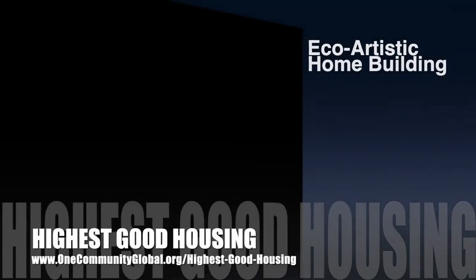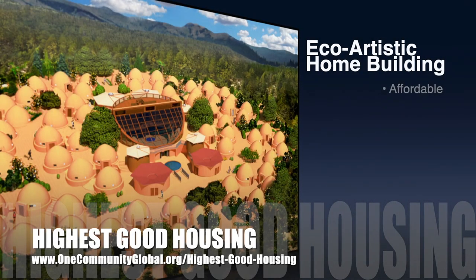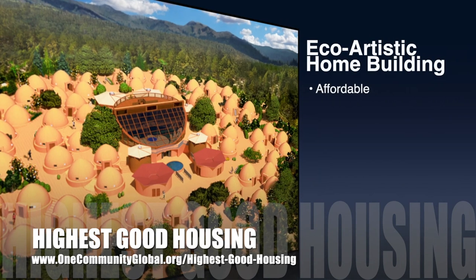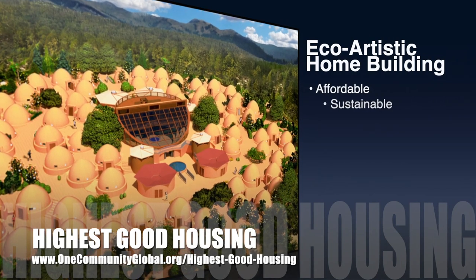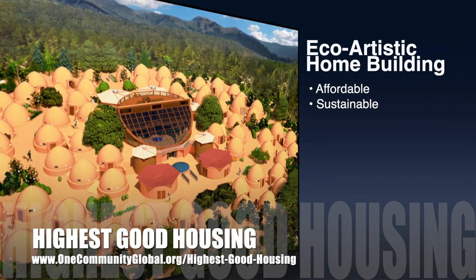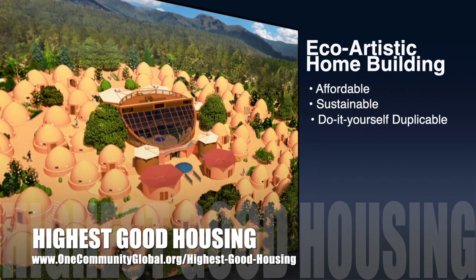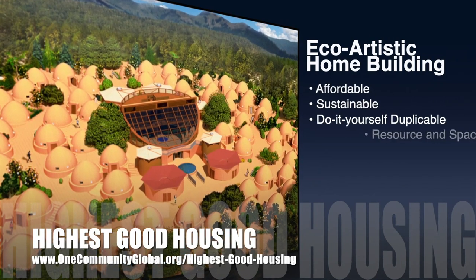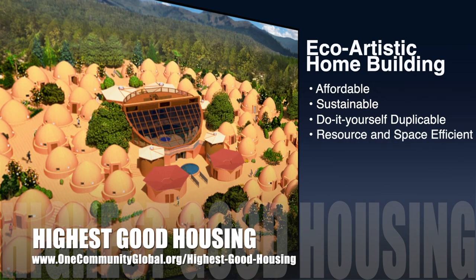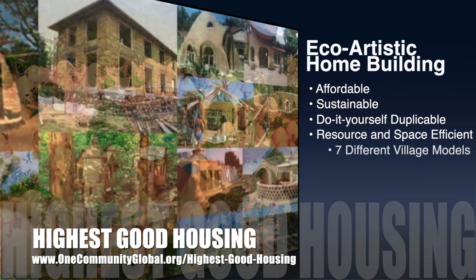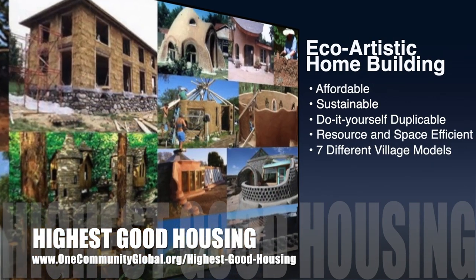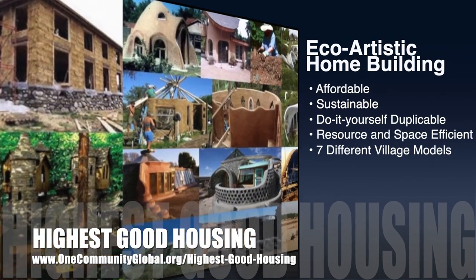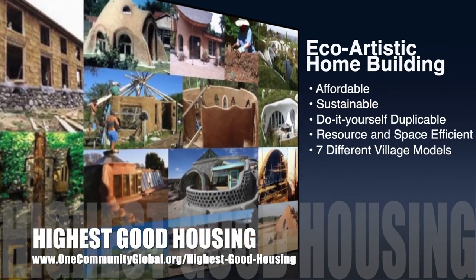The One Community approach to Highest Good Housing is eco-artistic home building that is affordable, sustainable, do-it-yourself duplicable, resource and space efficient, and consists of seven different sustainably constructed village models.